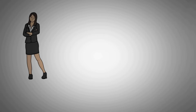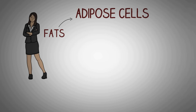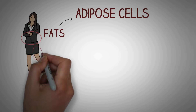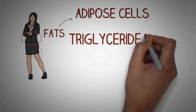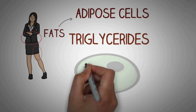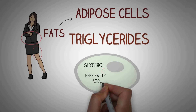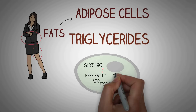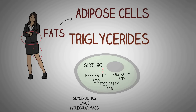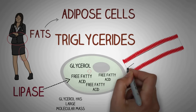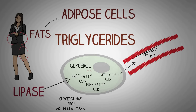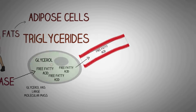The human body contains fats located in main areas like the abdomen, thighs, and arms. The adipose cells contain triglycerides, which are glycerol in combination with three free fatty acids. Glycerol has a large molecular mass, which prevents the escape of free fatty acids from adipose cells. Here the enzyme lipase comes into play, which breaks the bond between glycerol and free fatty acids. Once this bond is broken, the free fatty acids can enter into the bloodstream and virtually reach any cell of the body able to metabolize them.